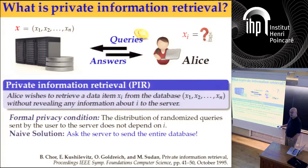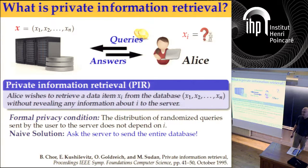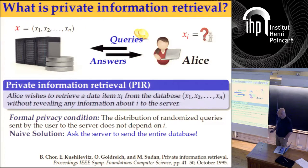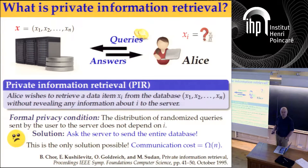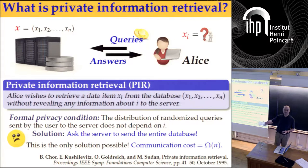Unfortunately, in the paper that introduced this whole problem — some 20-plus years ago, 1995 — they show this is the only solution. In fact, if you want to achieve this privacy, then the number of bits that you have to communicate between the user and the server is going to be proportional to n.